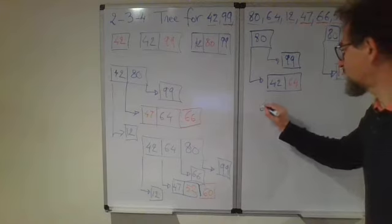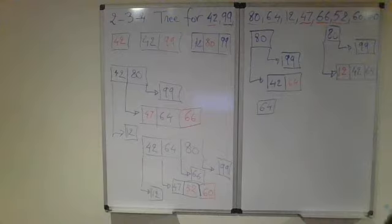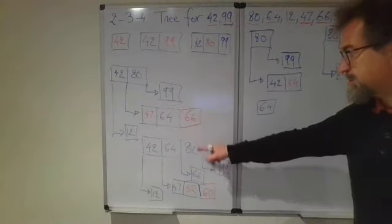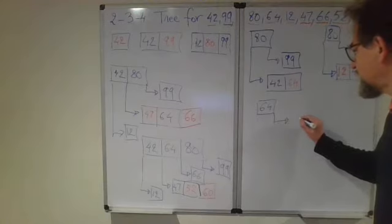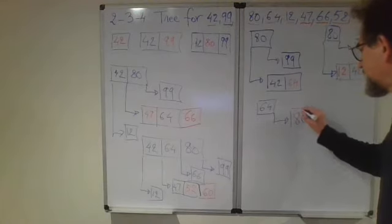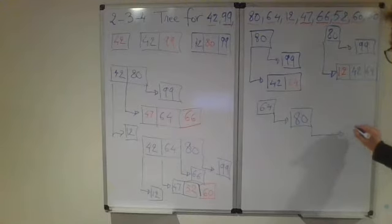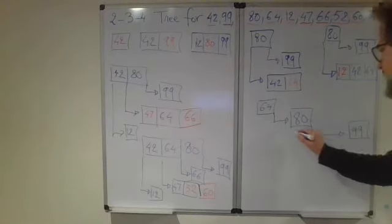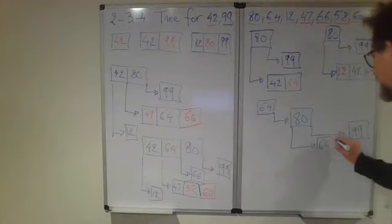So 64 now becomes the new root. We will distribute, we will put 80 at the right. So 80 has 99 as its right child, and has 66 at its left child.